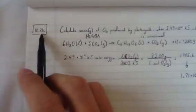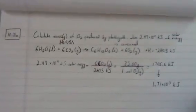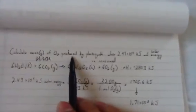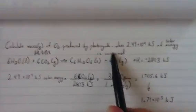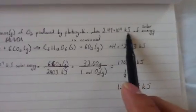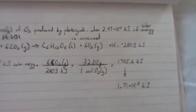Alright, this one is 10.3b from the textbook. The question is, calculate mass of O2 gas produced by photosynthesis when 2.49 times 10 to the 4th kilojoules of solar energy is consumed.